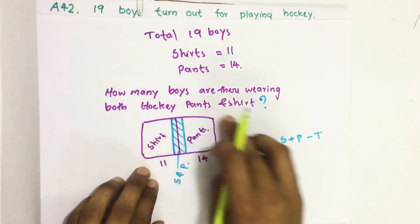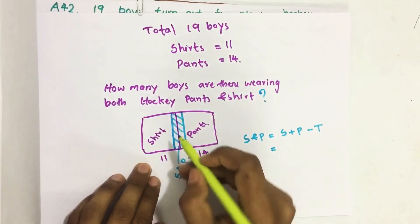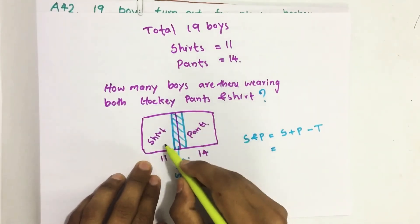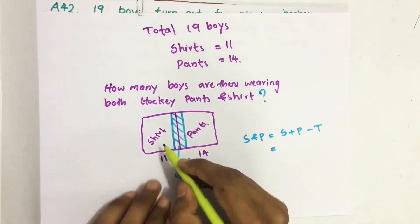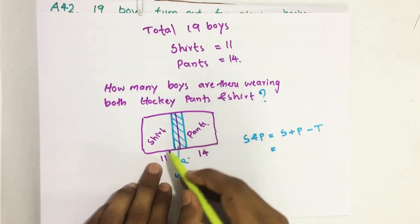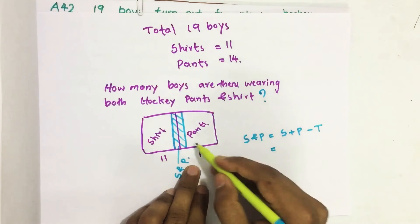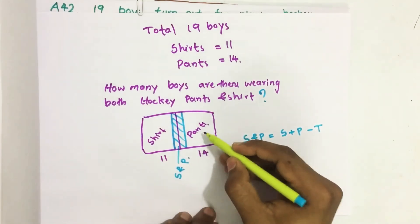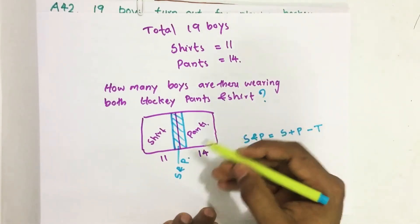Now let us suppose this is the hockey ground and this area indicating boys who wore shirts, hockey shirts, and this area indicating boys who wore hockey pants.